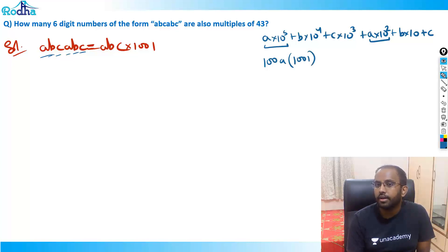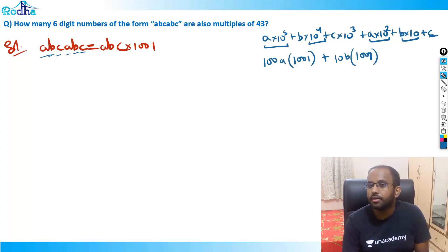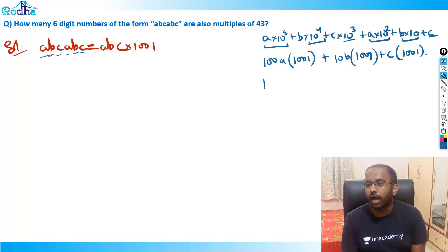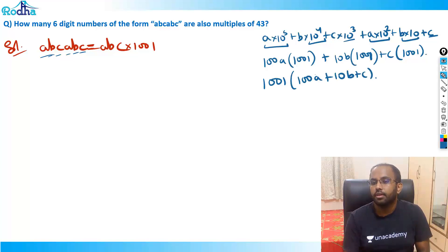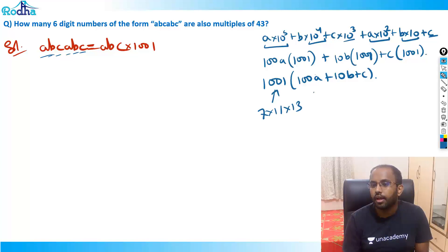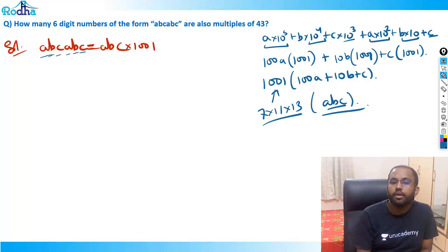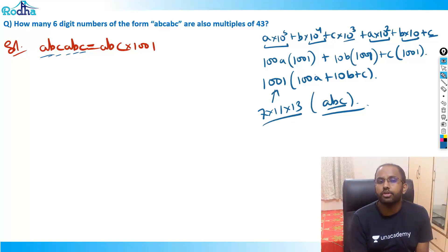Taking 1001 as common, it becomes (100a + 10b + c) × 1001, which is abc × 1001. Now, what is 1001? It factors as 7 × 11 × 13. And 100a + 10b + c is simply the three-digit number abc. So abcabc = abc × 1001. The question asks how many such numbers are multiples of 43.